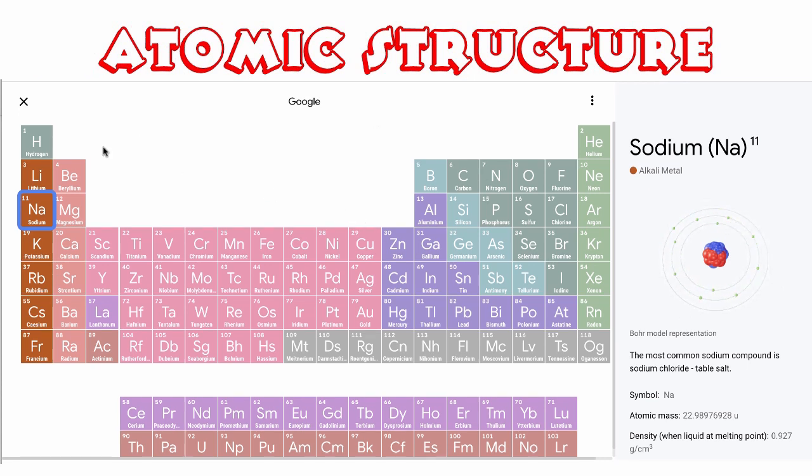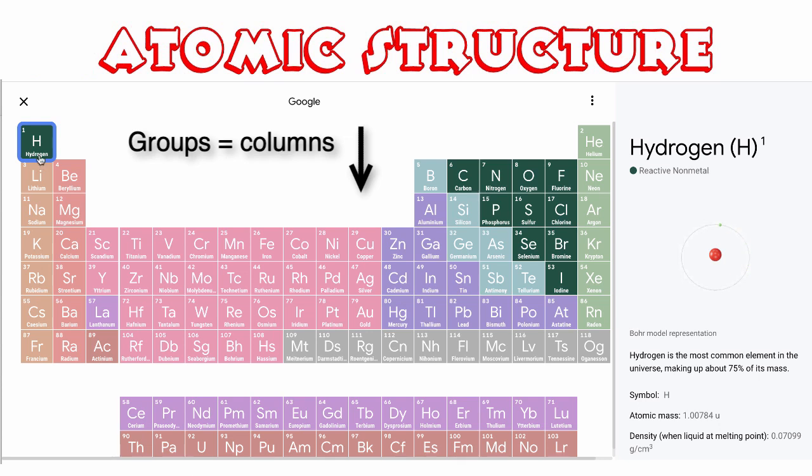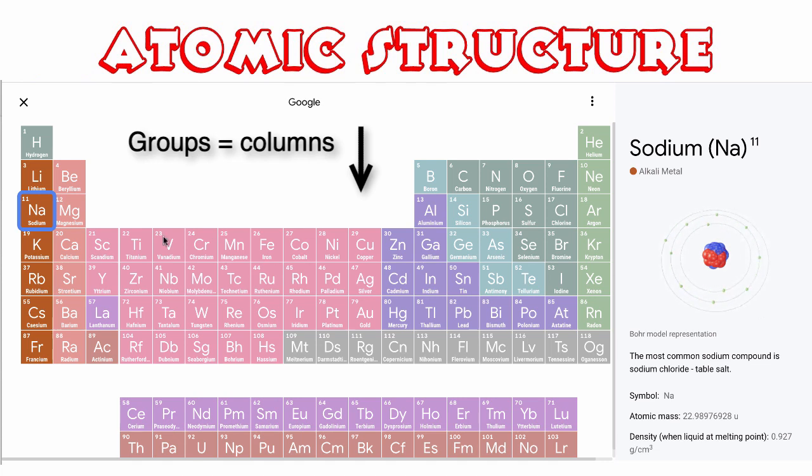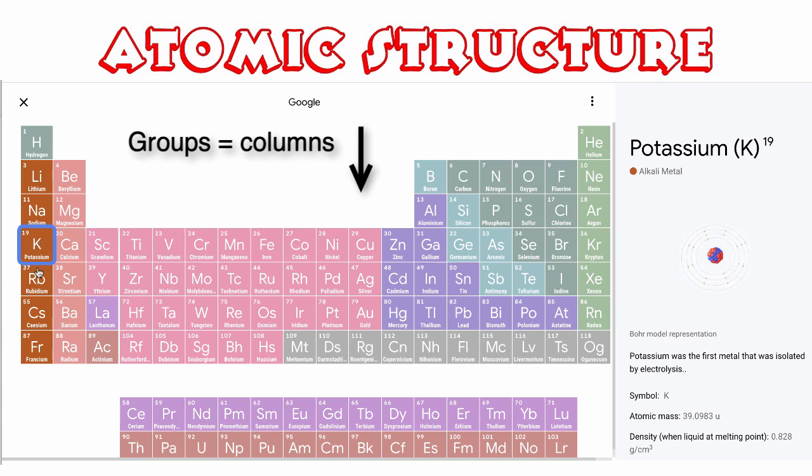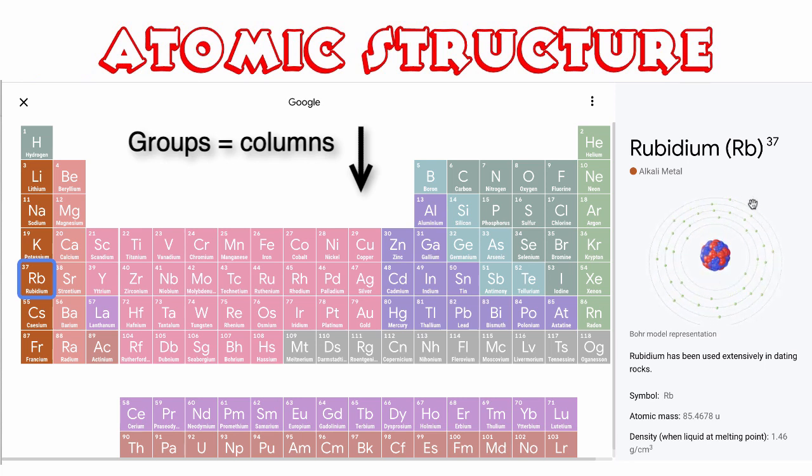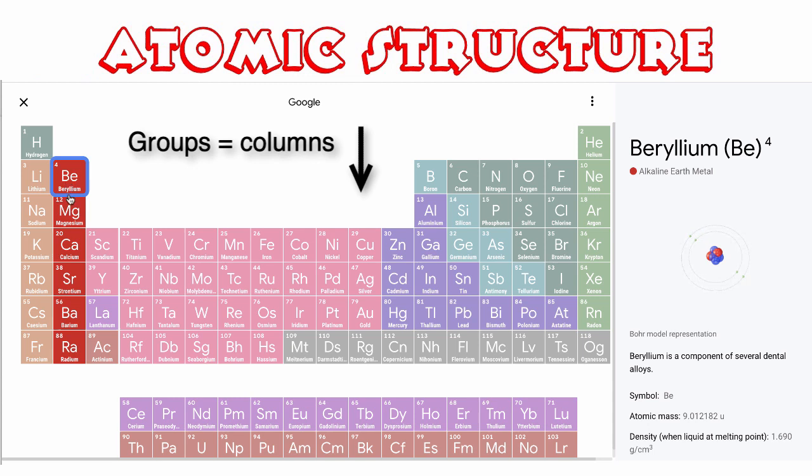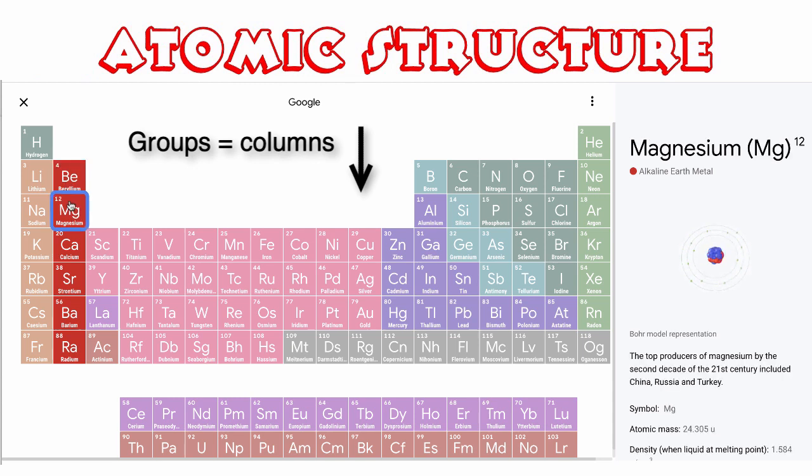Now let's consider the groups. So the groups are our vertical columns. So here I've got hydrogen, this is in group number one. Lithium, also group number one. Now it does have a different number of orbitals but there is something that's the same between all of them. Group number one, sodium, have a look at the valence electrons, so the electrons in the outer shell. Potassium, still group number one. Now the thing that's the same between all of these atoms is that they have one electron in the valence shell, in the outermost shell. All down group number one they all have one valence electron. We'll go to group number two, they all have two electrons in the outermost shell.